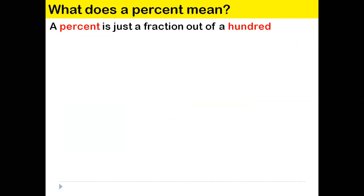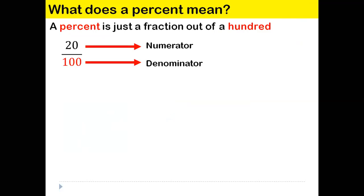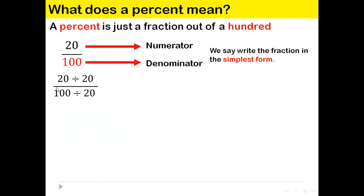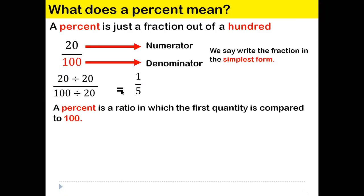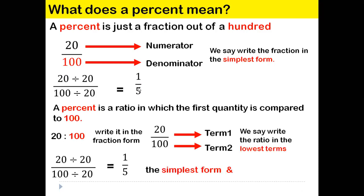As we've seen, percent is a fraction out of 100. Look at 20 over 100 — this is a fraction with a numerator of 20 and a denominator of 100. To simplify, we divide the numerator and denominator by their greatest common factor. The factors of 20 are 1, 2, 4, 5, 10, and 20 — and 20 is also a factor of 100. So we divide 20 by 20, which is 1, and 100 by 20, which is 5. That gives us 1 over 5 as the simplest form. So 20 to 100 simplifies to 1 to 5.